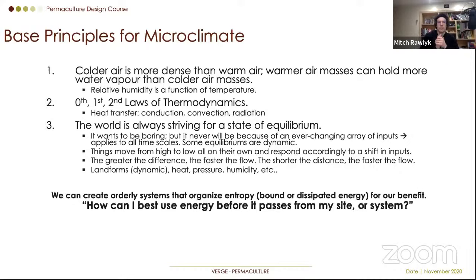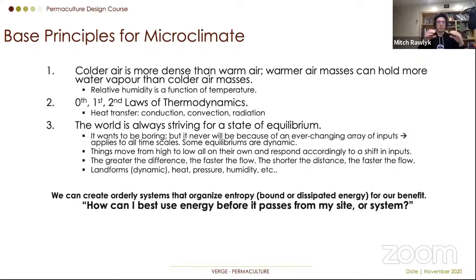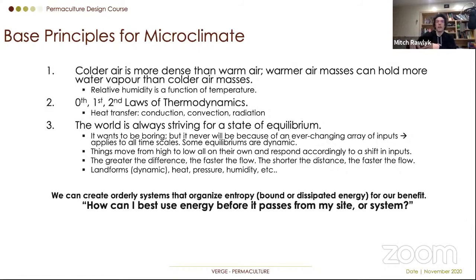The first principle: cold air is more dense than warm air because it's heavier — it has more mass. Warm air masses can hold more water vapor than cold air masses. If we have two uniform air masses with the same amount of water vapor and we cool one, it won't be able to hold that water and it will condense out. If we warm the other, the water content stays the same but it becomes relatively drier because it can hold more. That's why relative humidity is a function of temperature.